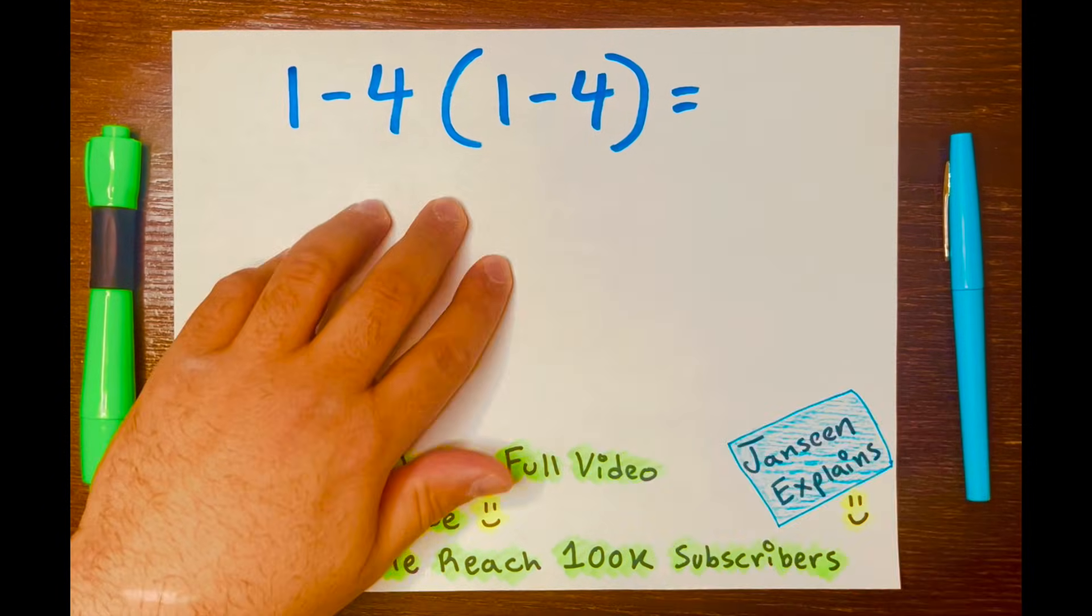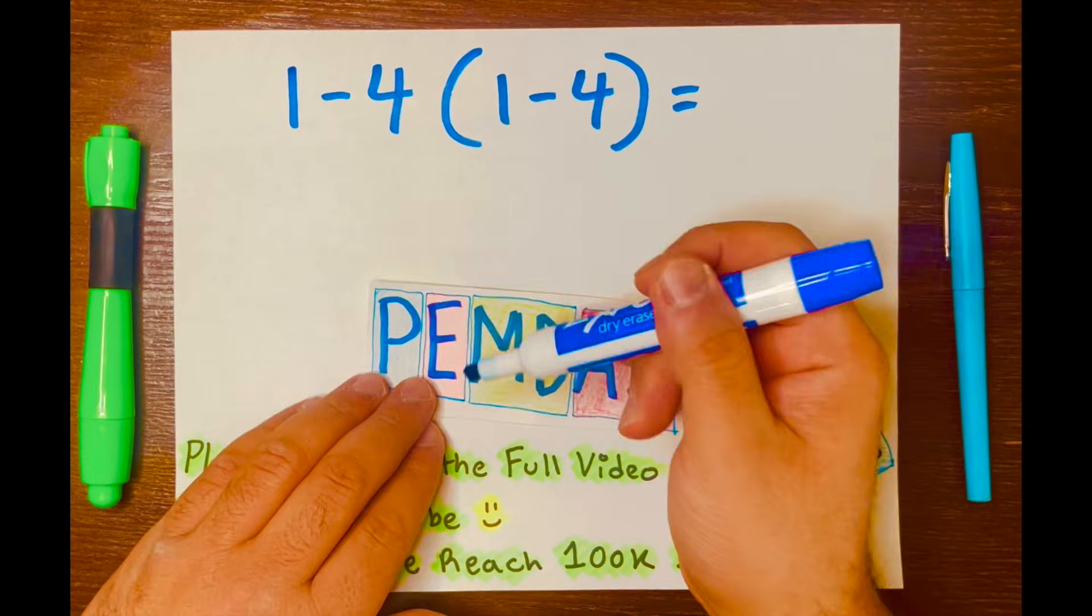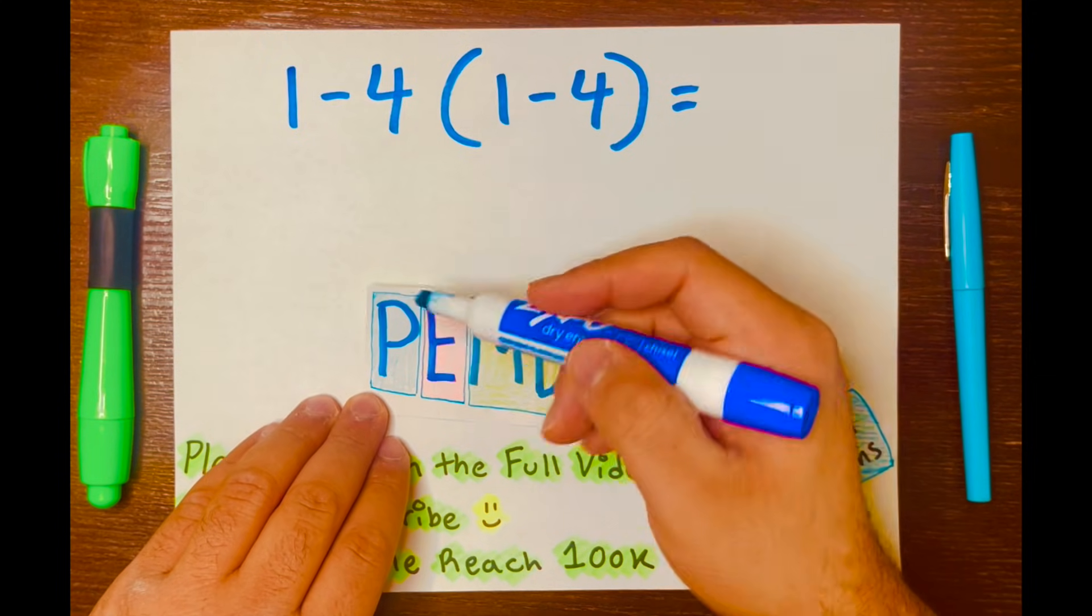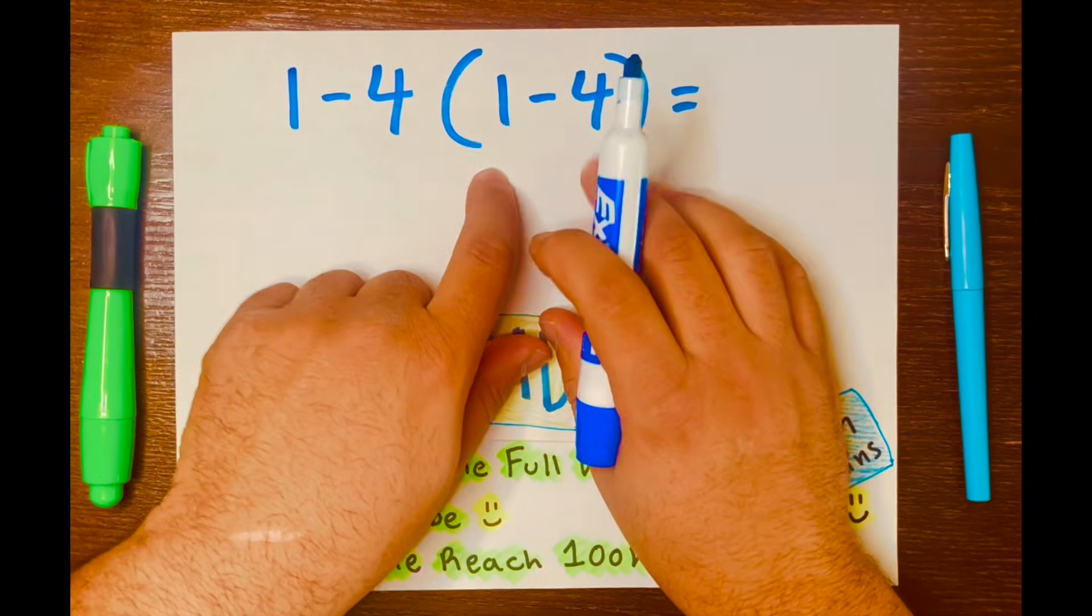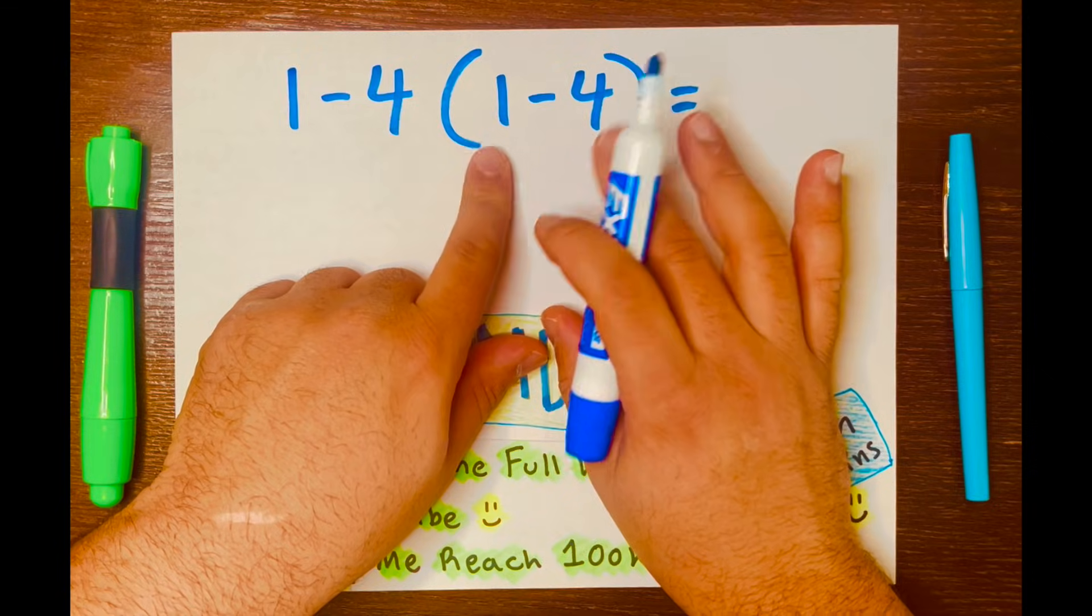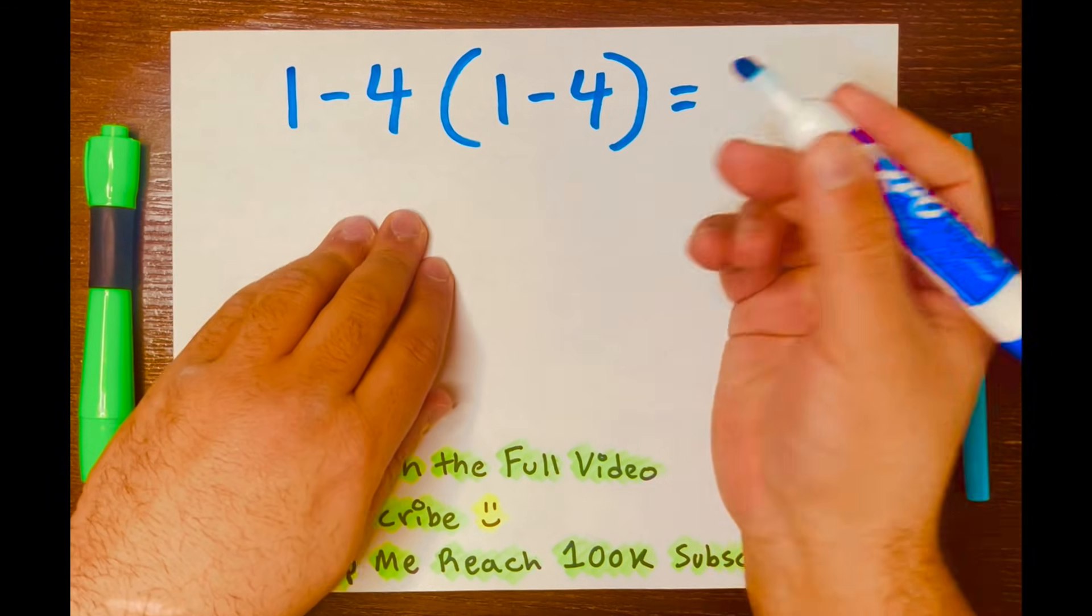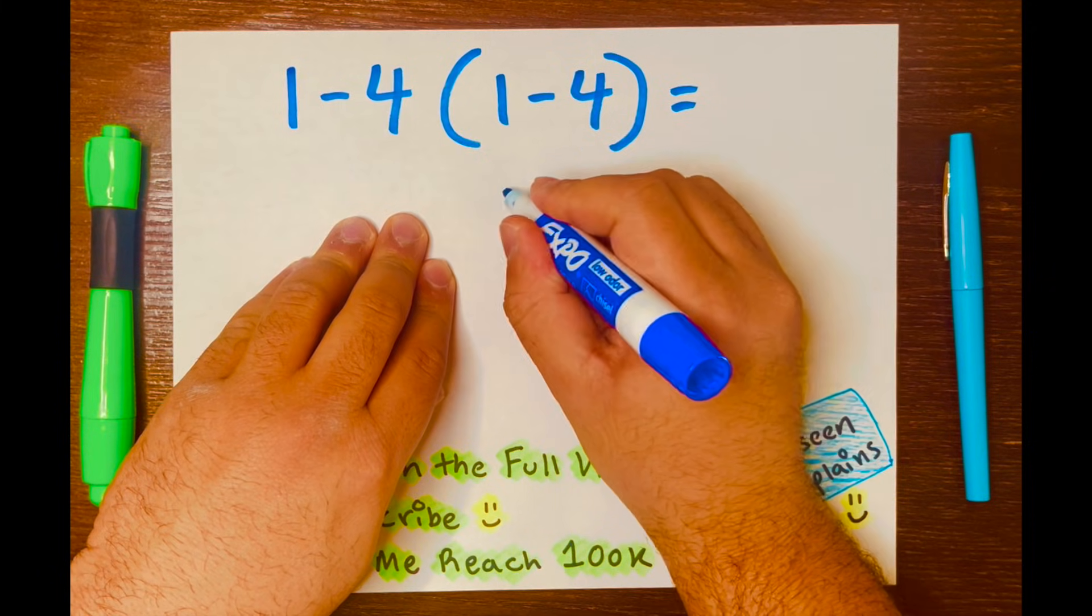To solve this math problem, we're going to need the help of PEMDAS. And PEMDAS is telling us, hey, parentheses go first. So what's inside the parentheses will go first. So 1 minus 4 equals negative 3.